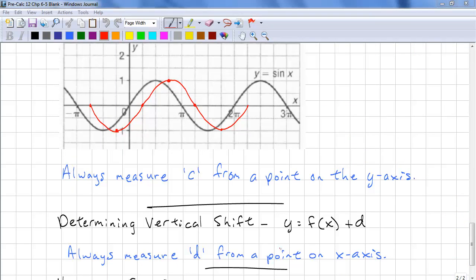Finally, we need to determine the vertical shift. This is of the form y equals f of x plus d. When d is greater than 0, that means up. When d is less than 0, that means down. This is the same as when we were using k. You should always measure d from a point on the x-axis. Another way to look at it is where is the center line. The amount that you shift the center line from the x-axis is another way to do it.